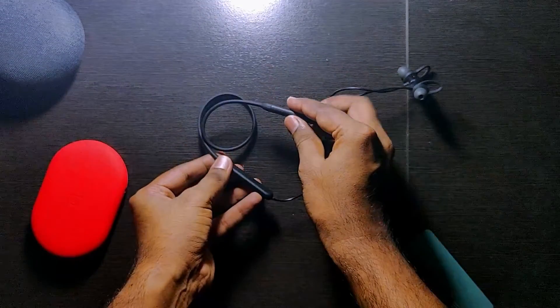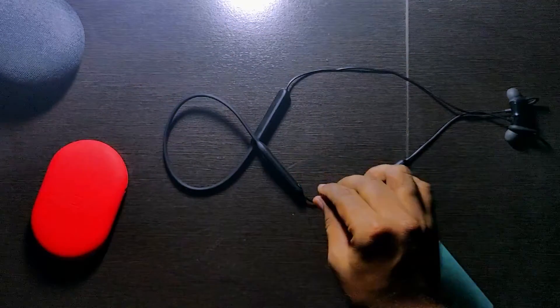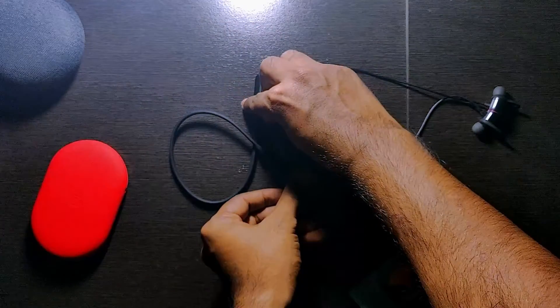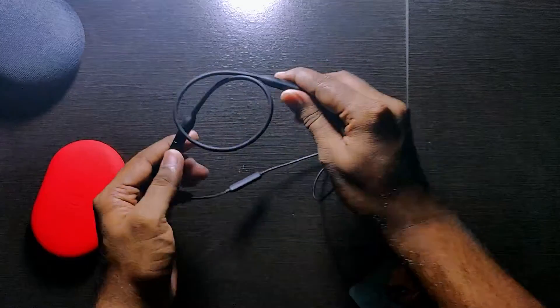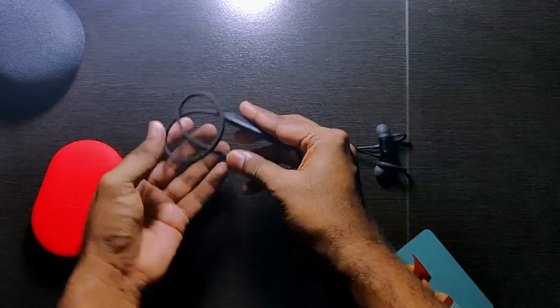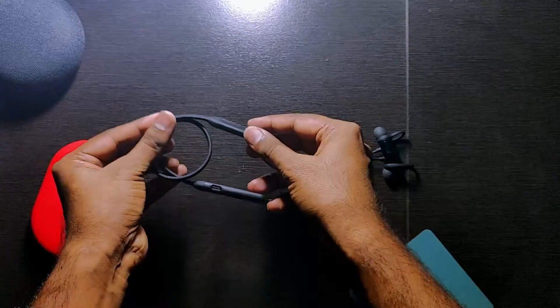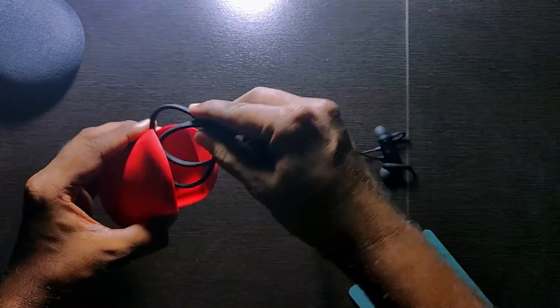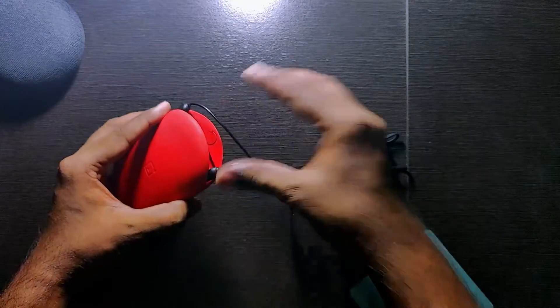Next, you hold these battery compartments and turn them to wind the cable between it. And place this thick cable part along with the battery compartments into the pouch first. This is the part you have to keep first, remember that.